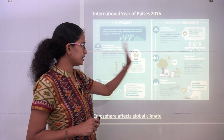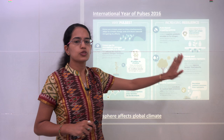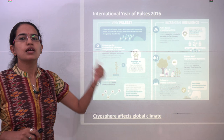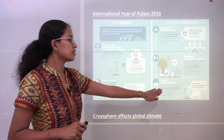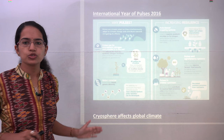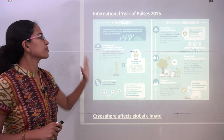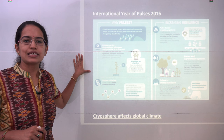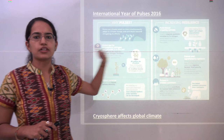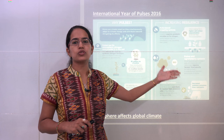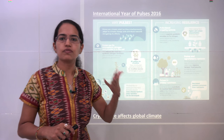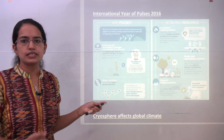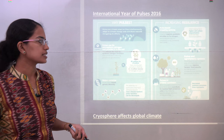Pulses also have the capability to decrease methane emissions from animal remnants because they improve the food conversion ratio in most animals and plants. Therefore, they affect climate change. Ultimately, less nitrogen is being released into the atmosphere, resulting in fewer greenhouse gases. Growing more pulses is a beneficial effort in this direction.